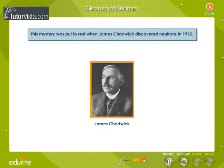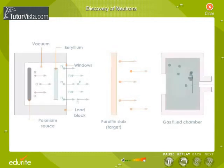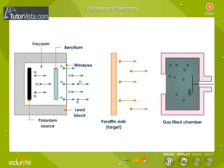This mystery was put to rest when James Chadwick discovered neutrons in 1932. Let us now understand the experiment performed by Chadwick with the help of a flowchart.